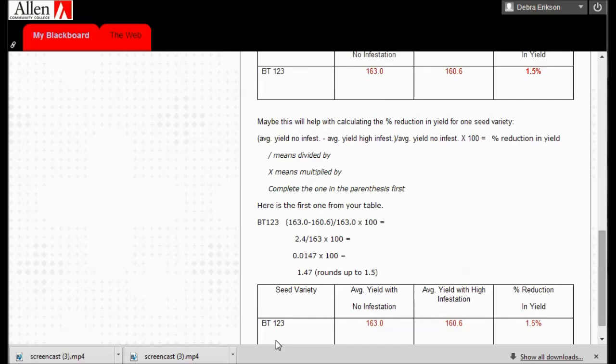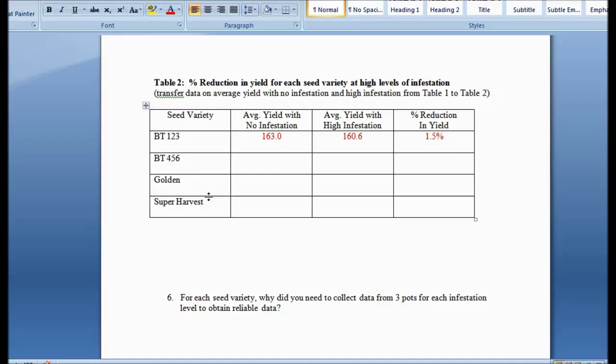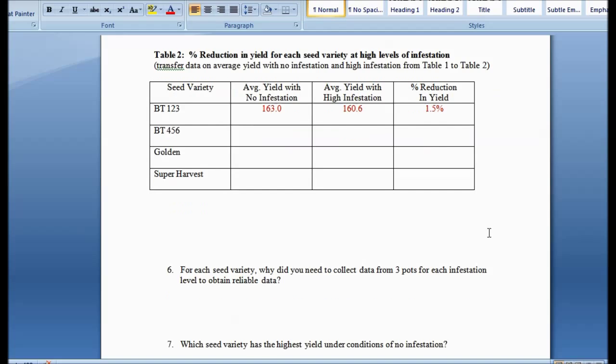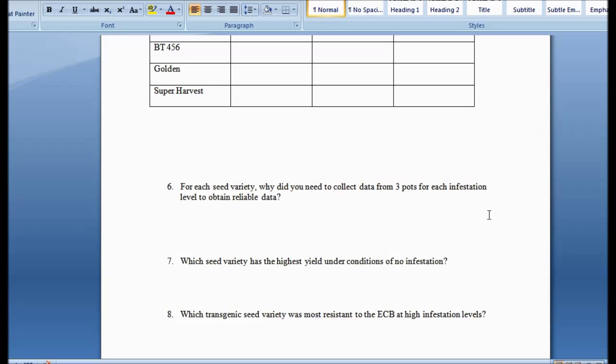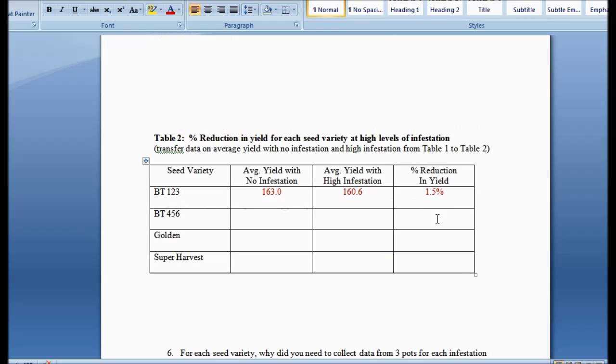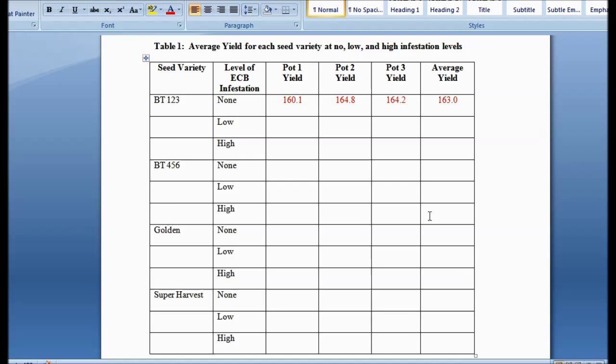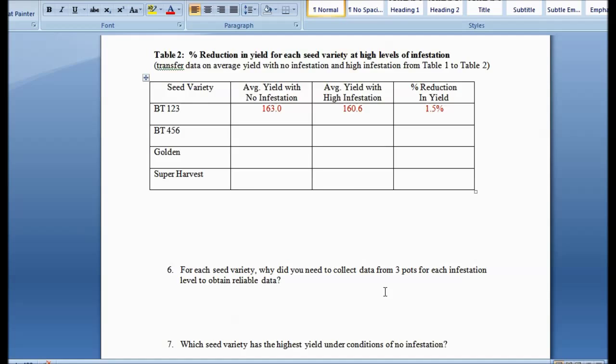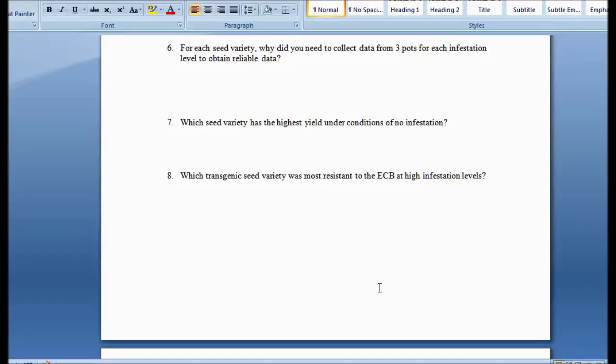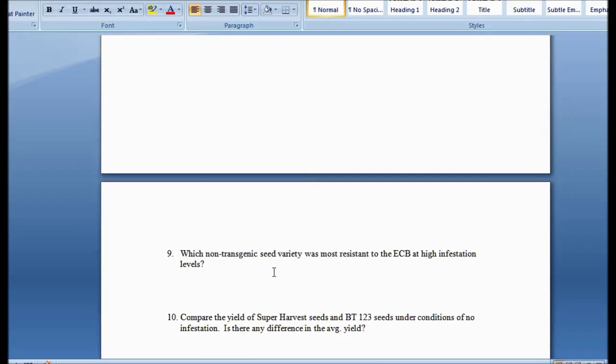Then let's go back to your worksheet. So now you have this all filled out with your percent reduction and yield. That means how much less resistant this variety is to those corn borers. Alright. So why did you collect data from three pots? So answer these questions. Which seed variety has the highest yield under conditions of no infestation? You go back to there you are. You could talk about the average yield on that one. Just tell me what you're doing and that works for me. Tell me the data you're referring to. Which transgenic seed variety was most resistant? That's the BT one. That's the changed one. Which one non-transgenic seed variety? That's the non-BT versions. That would be either Golden or Super Harvest.